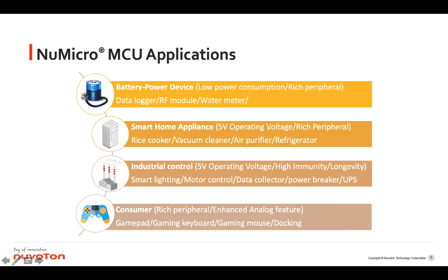The third target application is industrial control, such as motor control and servo control, which requires 5V operating voltage, high immunity, and longevity. NuvaTen provides more than 10 years of product longevity for industrial control applications. The fourth is consumer products such as docking stations and PC peripherals, which need rich peripherals and analog features. The built-in OPA and ACMP can save BOM cost and reduce PCB size.